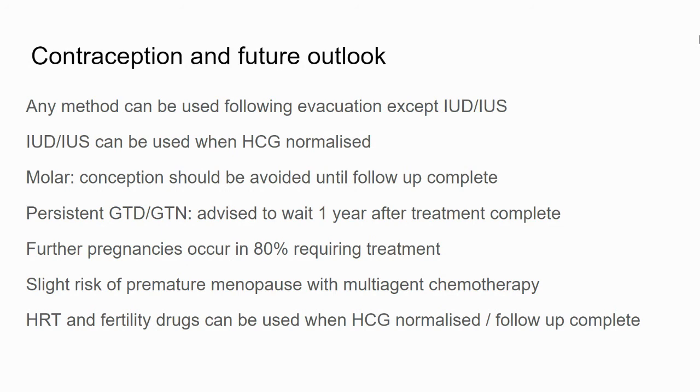Once the beta-HCG has normalised and follow-up is complete, use of HRT and fertility drugs, if needed, can be used.